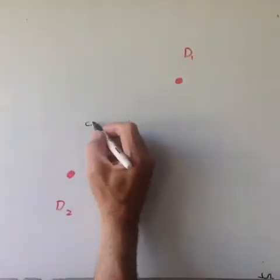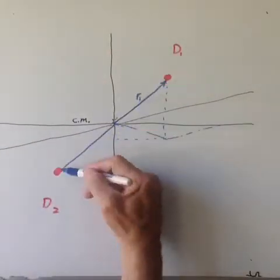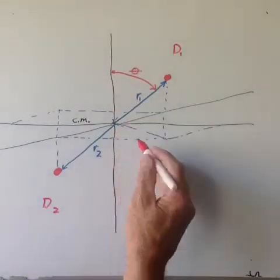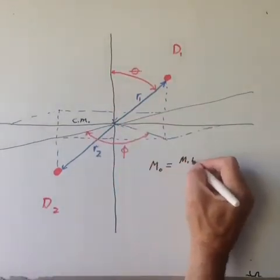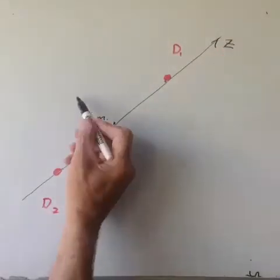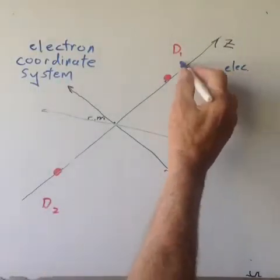Here we show two deuterons and the axis set up to describe their position. This is a generic central force problem using spherical coordinates. The electron coordinates rotate with the deuteron with the z-axis passing through the center of mass of each deuteron. The x and y coordinates are then orthogonal to the axis through the nuclei.